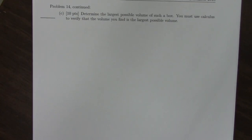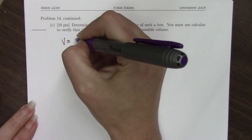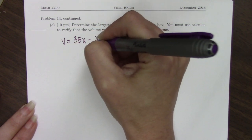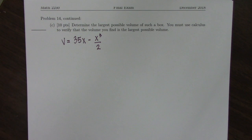There's a part C on this question. Part C says, determine the largest possible volume of such a box and you must use calculus to verify that your volume is indeed the largest possible volume. So we have to find our critical value and then verify that it is the absolute maximum. I'm going to copy over my equation for volume that we simplified from part A.